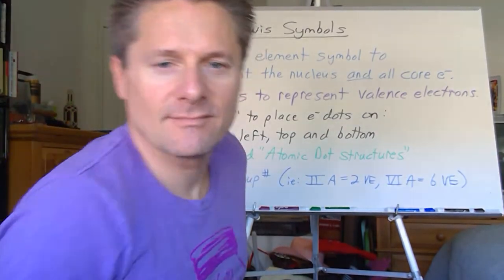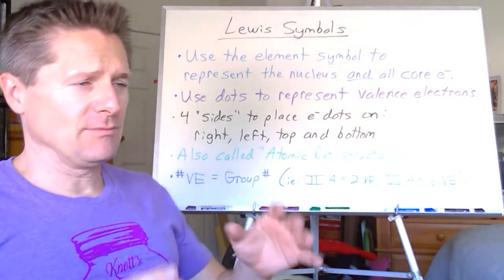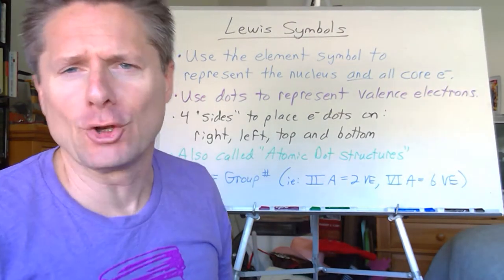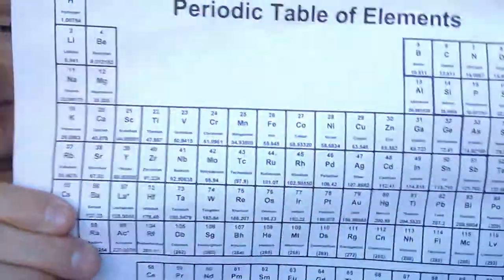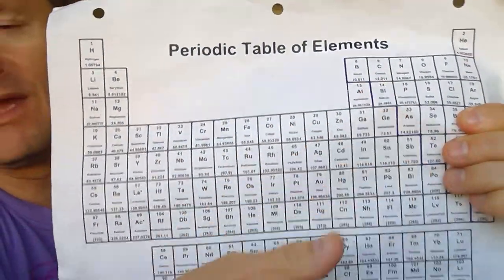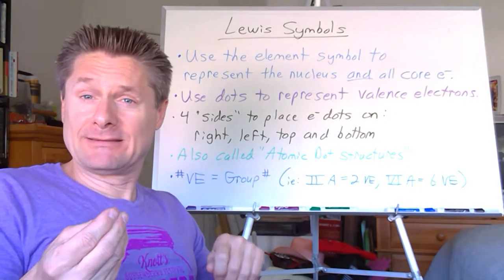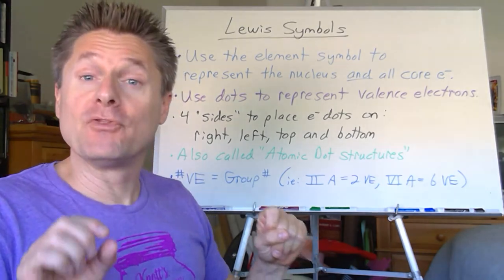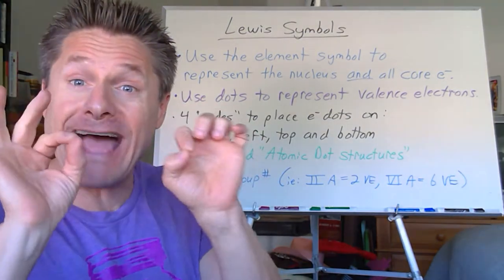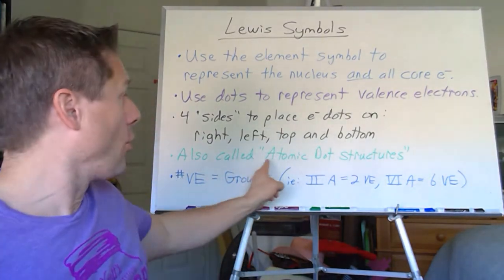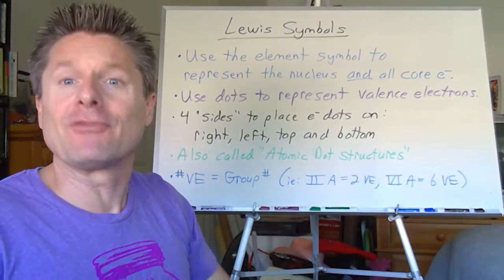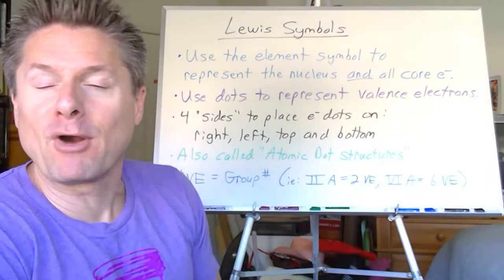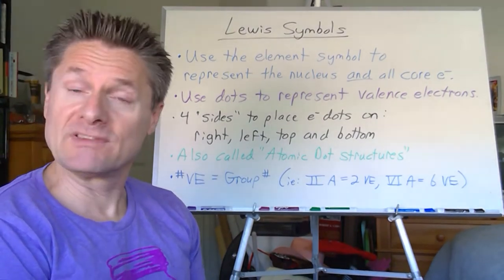Now, how do we represent all those electrons and the elements when we put them together? We call them Lewis symbols. A Lewis symbol takes the element symbol from the periodic table — that symbol represents the nucleus and all of the inner core electrons. Then we represent the valence electrons with little dots. They're sometimes called electron dot structures, atomic dot structures, or Lewis symbols. You'll hear all these different terms. There are some cool things you can predict from these Lewis symbols, though it's not perfect.